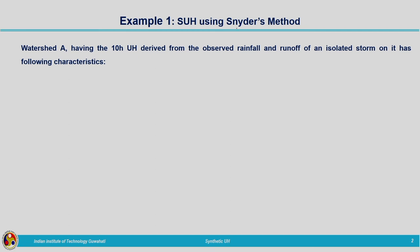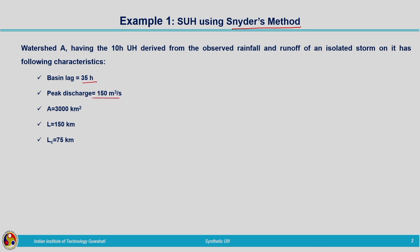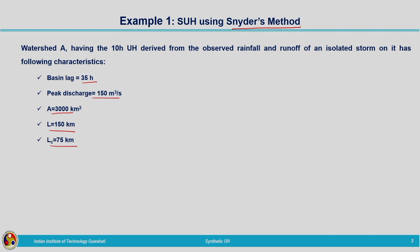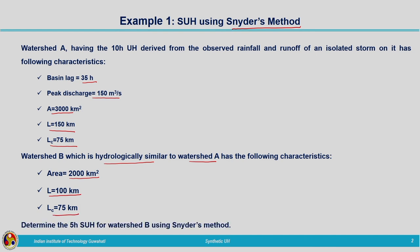The first example is related to Snyder's method. Watershed A has a 10-hour unit hydrograph derived from observed rainfall and runoff with the following characteristics: basin lag 35 hours, peak discharge 150 m³/s, area 3000 km², length of mainstream 150 km, and length from the point near the centroid to the outlet Lc = 75 km. Watershed B, hydrologically similar to A, has area 2000 km², L = 100 km, Lc = 75 km. Determine the 5-hour synthetic unit hydrograph for watershed B using Snyder's method.